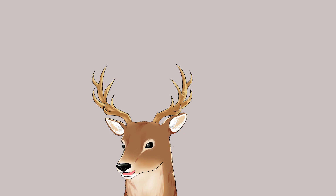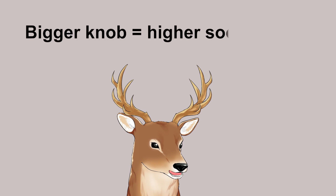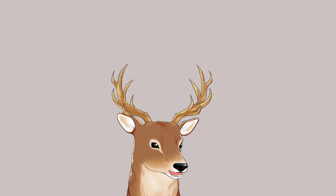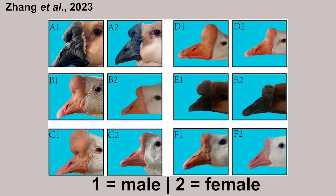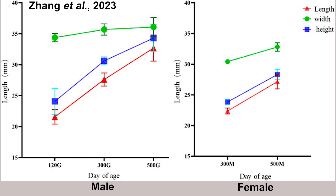Unfortunately, I don't know — if you know the answer, let me know in the comments. Some say that geese with bigger knobs have a higher social status in the flock. It's also apparent that male geese have bigger knobs than females. During growth, male and female develop their knob at relatively the same rate, but the male overtakes the female because they start developing the knob earlier.